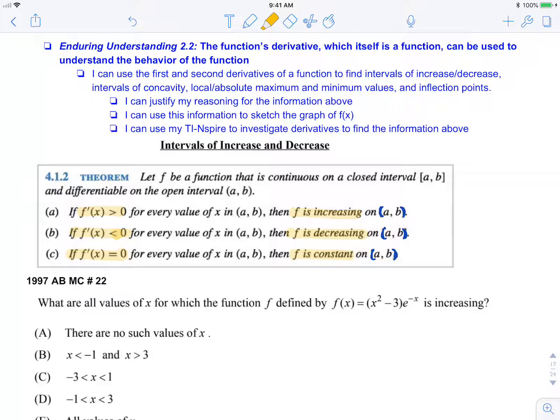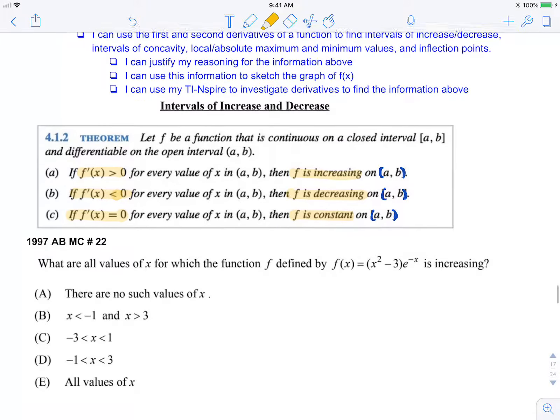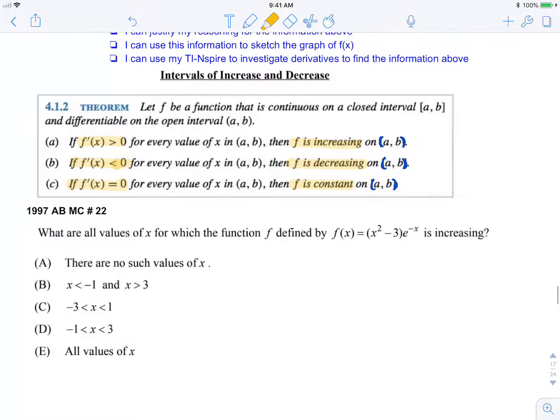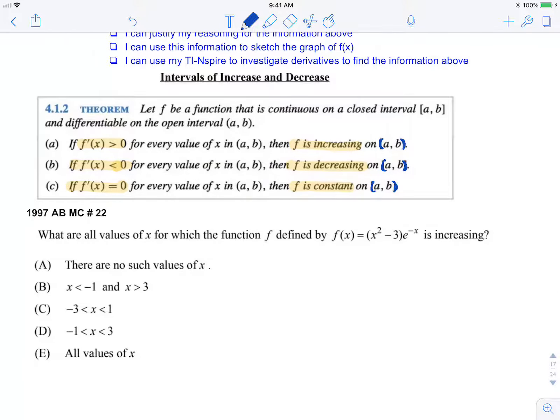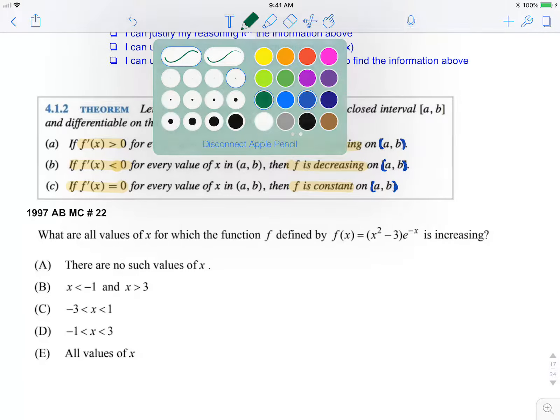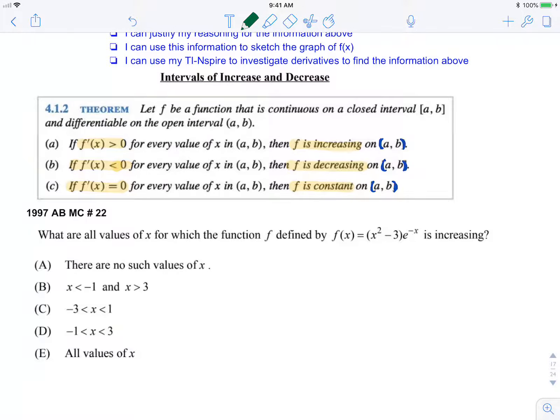Now we're going to use that idea to determine where this function is increasing. I need to check the derivative to see where my derivative is positive. For the derivative, f prime of x equals, using product rule, 2x e to the negative x plus x squared minus 3 times e to the negative x times negative 1.